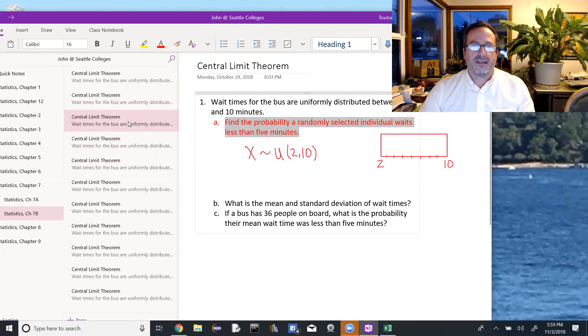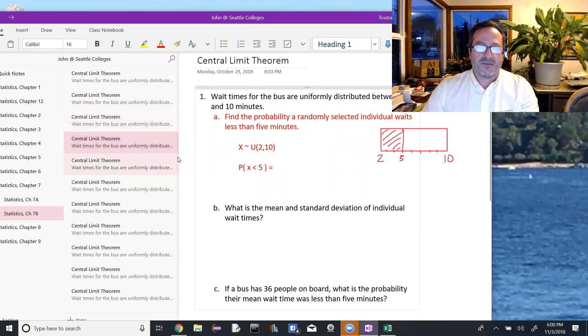So I want to look at the fact that x has a uniform distribution between 2 and 10. I've set up a uniform distribution between 2 and 10, and I want to look at the probability that x is less than 5. So I have a rectangle 2, 3, 4, 5 is here, shade the area to the left. Probability that x is less than 5 is 3 over 8 because there's 8 total units there, or 0.375.